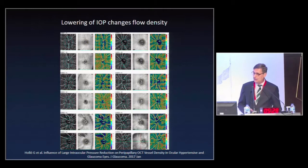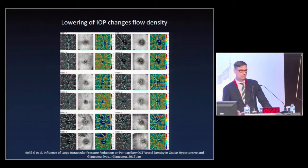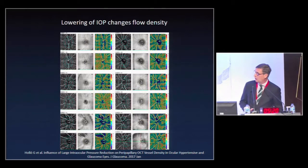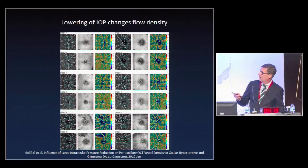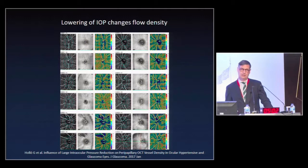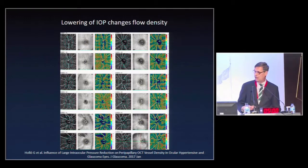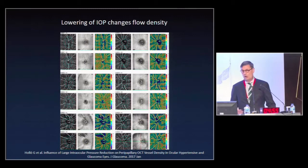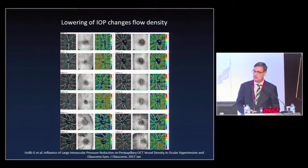OCT angio is also influenced by the therapy of our patients. In glaucoma, therapy involves lowering eye pressure to stop progression. Garbo Hollow from Hungary showed in a publication of 17 eyes before and after pressure-lowering surgery that capillary density increases after lowering intraocular pressure. So capillary density imaging is influenced by intraocular pressure after surgery or treatment, and this must be kept in mind for clinical work.